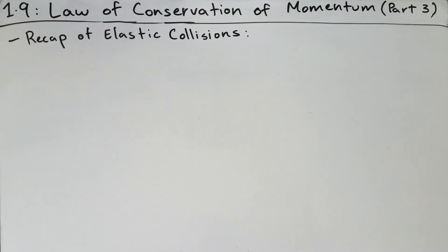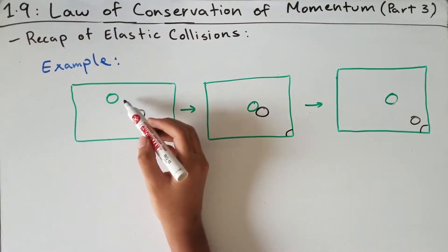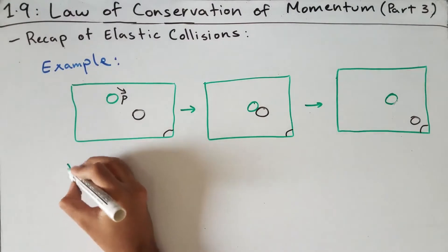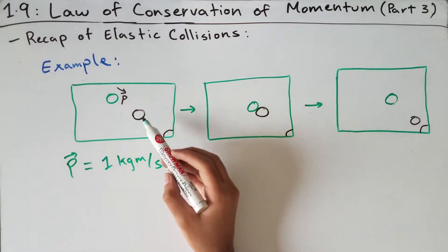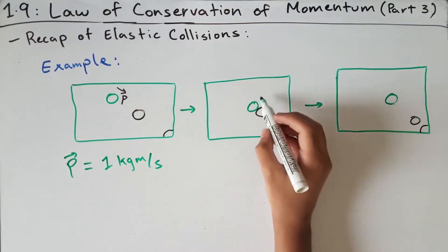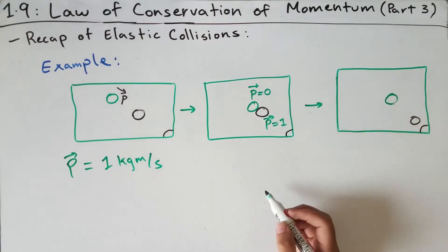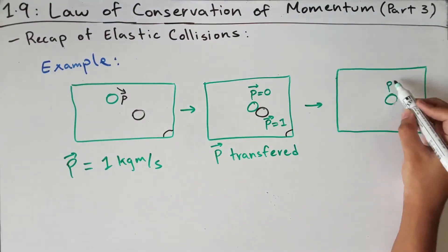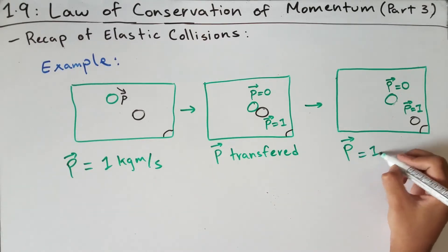Before talking about inelastic collisions, let's do a recap of elastic collisions from the previous video. An example of an elastic collision is one in which you're playing on a pool table. Let's say you have a cue ball in green and an 8 ball which you pot using the cue ball. The cue ball has a momentum of 1 kilogram meters per second. When it hits the black ball, the momentum transfers: the cue ball's momentum becomes zero while the black ball's momentum becomes 1 kilogram meters per second.